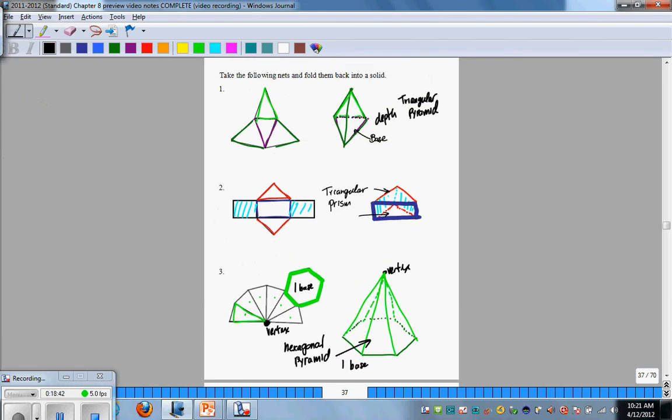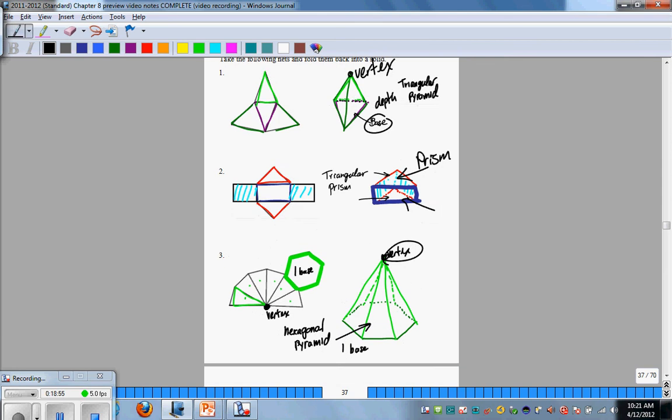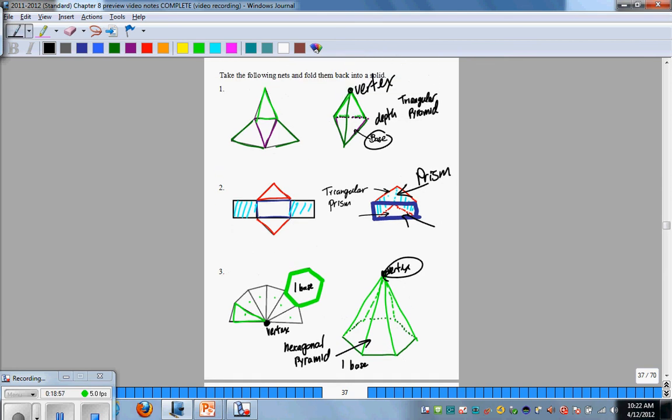Just to recap, one base and a vertex is a pyramid. Two bases, it's going to make this a prism. This is a pyramid - a vertex and one base. We'll be doing more practice of this with more hands-on activities in class with more materials.